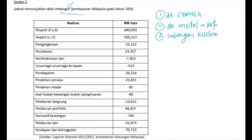Di mana imbangan keseluruhan ini sebenarnya juga merupakan imbangan pembayaran. Jadi pelajar kena ingat, imbangan pembayaran hanya mempunyai tiga akaun yang utama sahaja — iaitu akaun semasa, akaun modal dan kewangan, dan satu lagi adalah akaun keseluruhan.